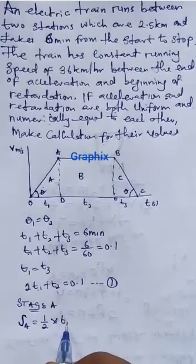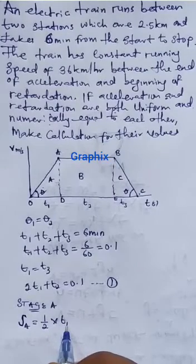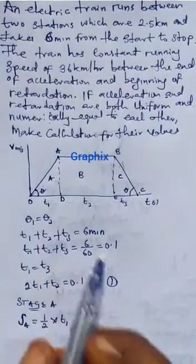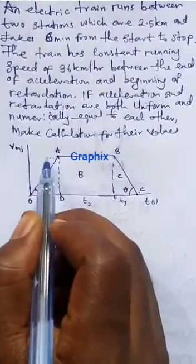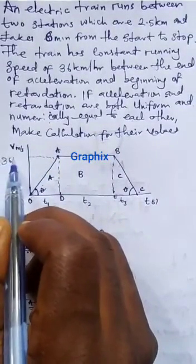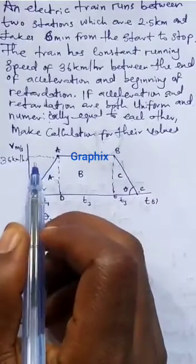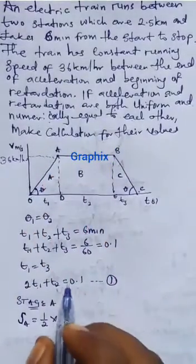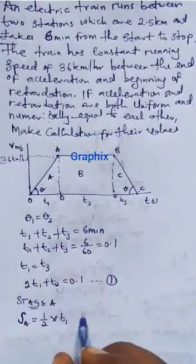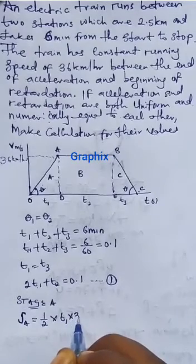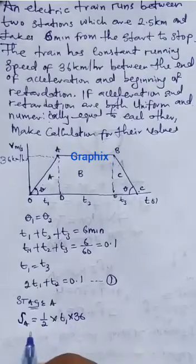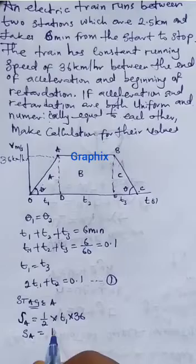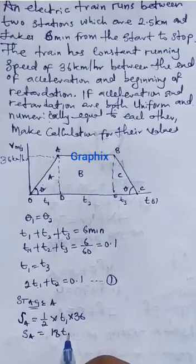At Stage A, SA will give me 1 over 2 times the base, which is T1, times the height. What is the height there? The height is 36, because the train has a constant running speed of 36 km per hour. So my SA will be equal to 18T1.